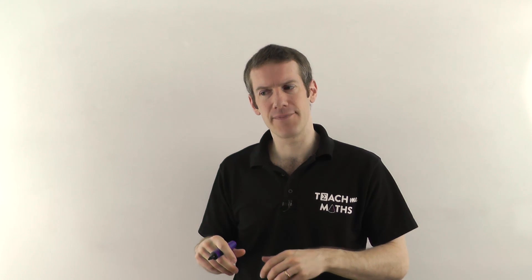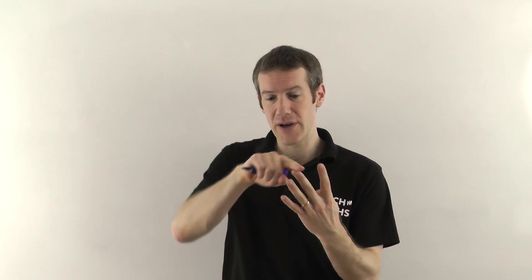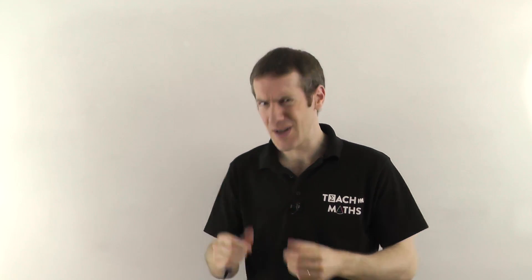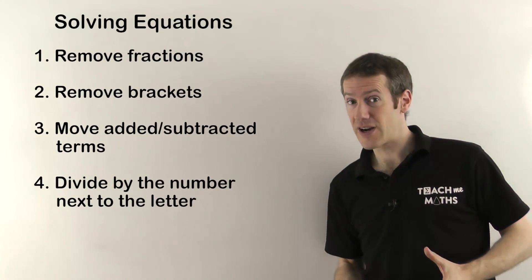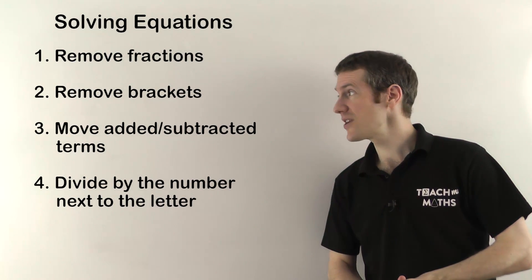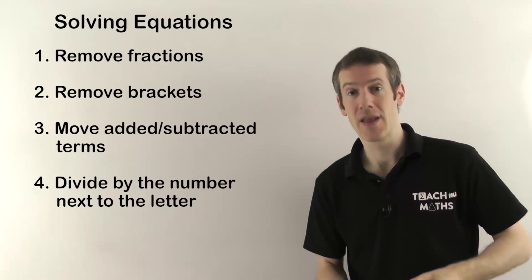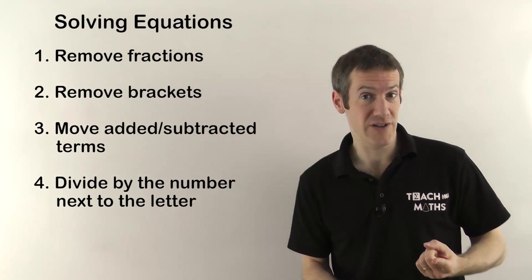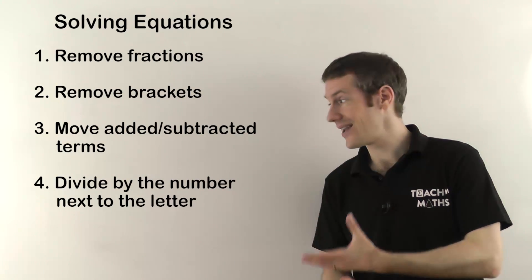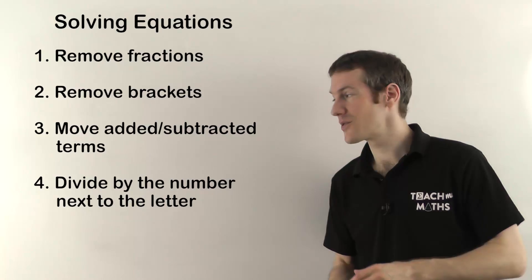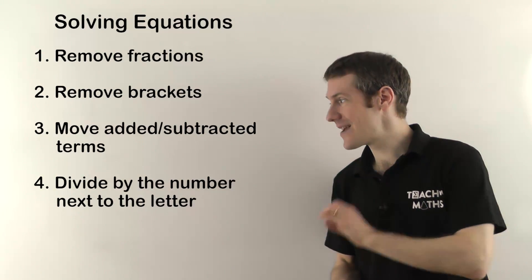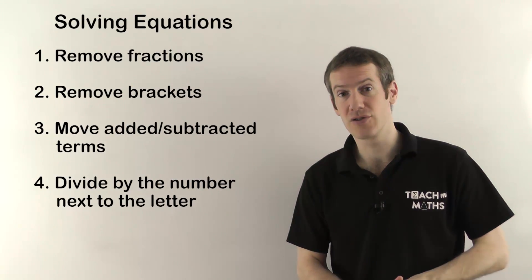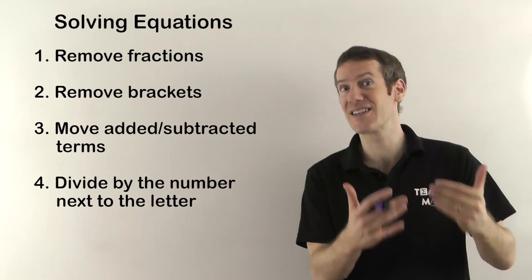In the first video I went through equations that involve just the last of four steps I recommend you follow for transposition. Just like solving equations, you follow these four steps in order and you'll always solve your problem. Step one: remove fractions. Step two: remove brackets. Step three: move added and subtracted terms — that's what we're looking at in this video. Step four: divide by the number next to the letter. Videos three and four will cover the first two steps, so the difficulty gradually increases.